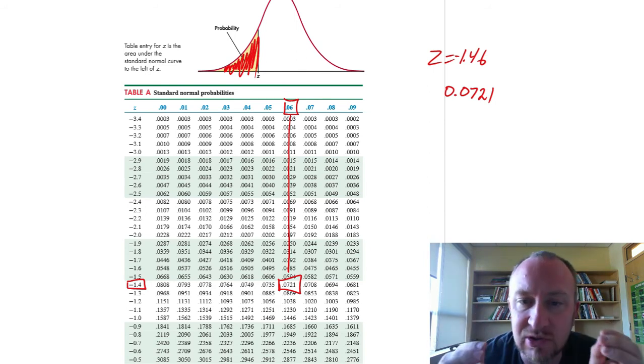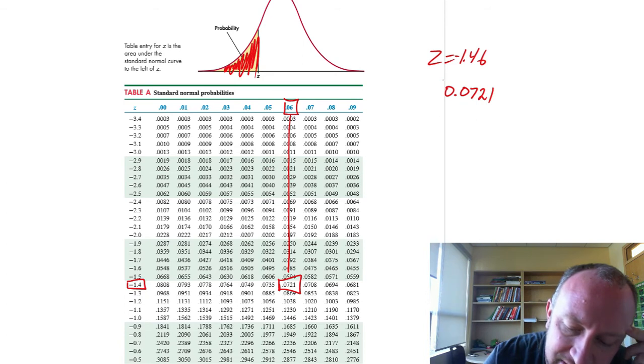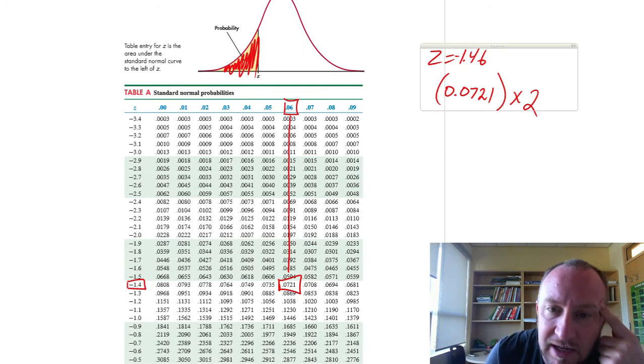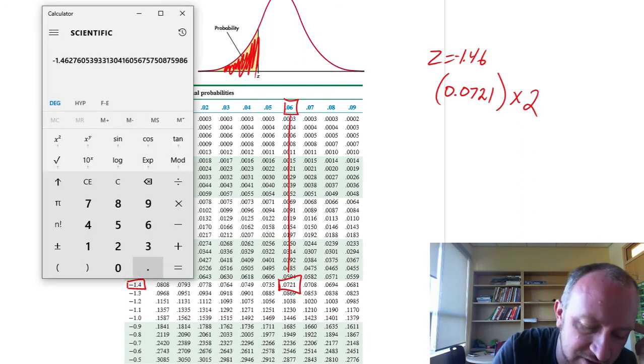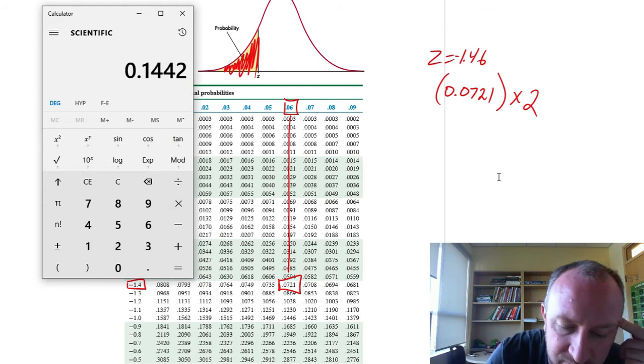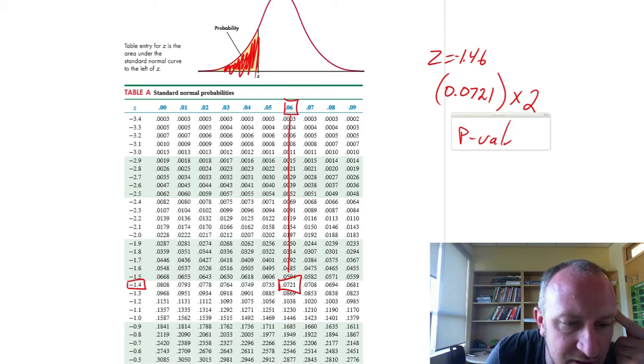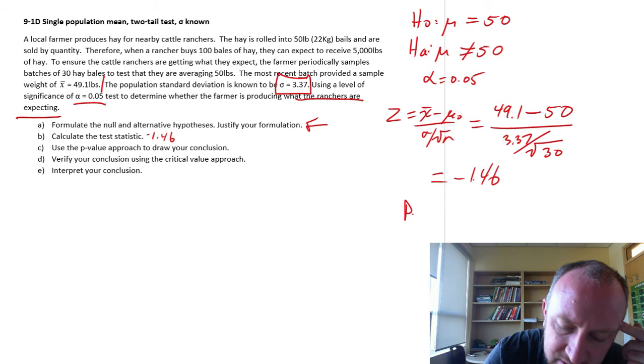Now again, this is a two-tailed test. We always have to remember when we're doing two-tailed tests, and only when we're doing two-tailed tests, we have to multiply that probability by 2. So I'll have 0.0721 times 2. And I have 0.1442. Actually, why don't I just write that over here? Our p-value is 0.1442.